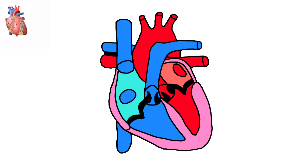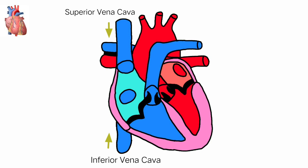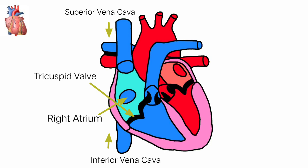This is the inner side of the human heart — I drew it in Ibis Paint. The first flow of blood is in the superior vena cava and in the inferior vena cava. Next, the flow goes into the right atrium, and after that it goes down into a valve called the tricuspid valve.